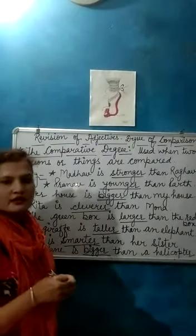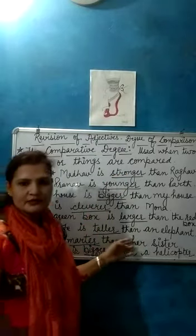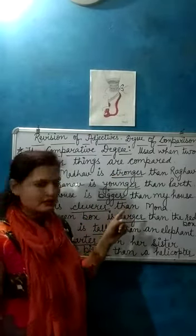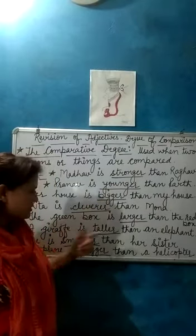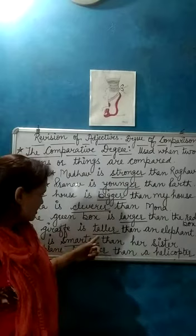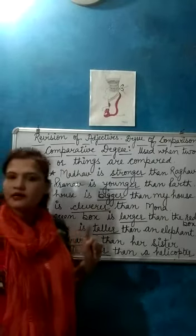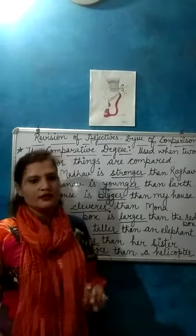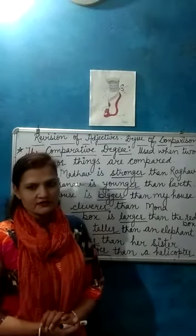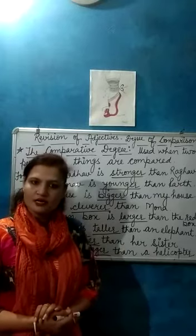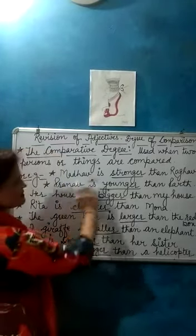In all these examples, the comparative adjectives stronger, younger, bigger, cleverer, larger, taller, smarter, and bigger are used to refer to a greater degree of the adjective as compared to the positive degree.